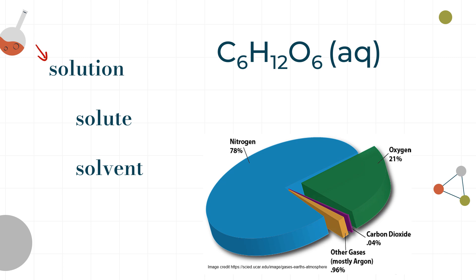A few definitions: a solution is a homogeneous mixture where one or more solutes are dissolved in a solvent. The solute is the stuff getting dissolved; the solvent is the stuff doing the dissolving. The more solute there is, the more concentrated the solution. The less solute, the more dilute. Generally, more than 10% solute by mass is considered concentrated; less than 10% is dilute.